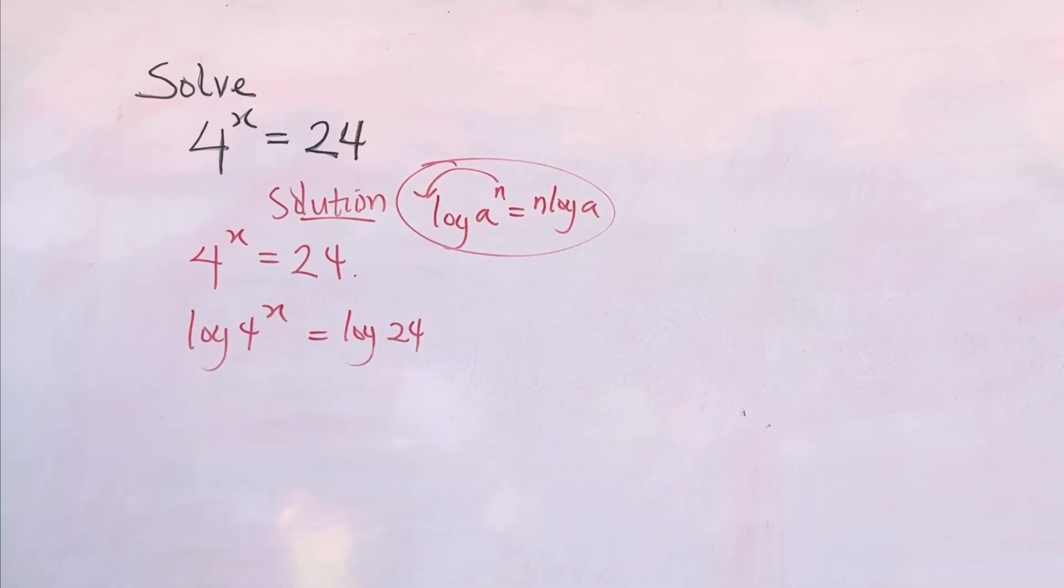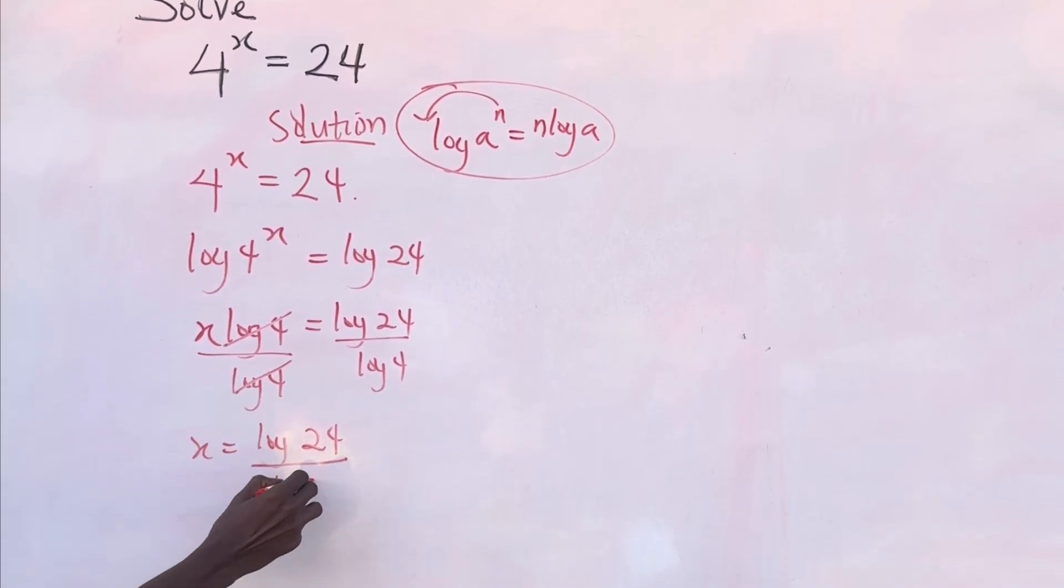So this is a law of logarithms which is common. So from here, this will give us x log 4 equals to log 24. And now we can divide both sides by log 4, so that this cancels this and x equals to log 24 over log 4.